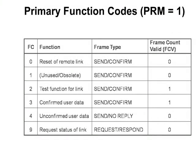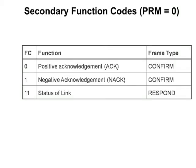The function codes vary depending on whether or not the primary bit is set. This table outlines function codes and frame types when the primary bit is set. This table outlines the function codes that are used when the primary bit is not set.